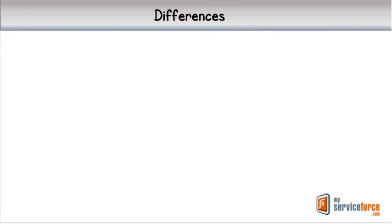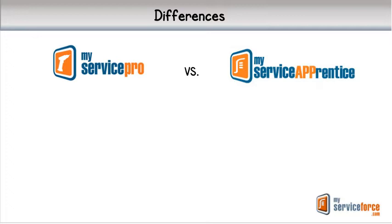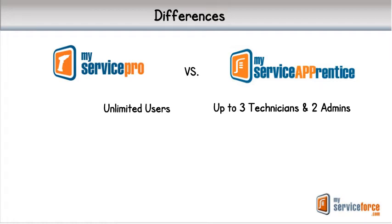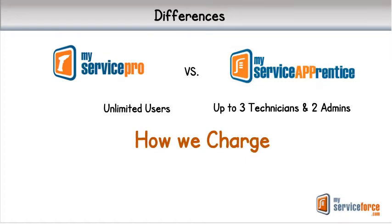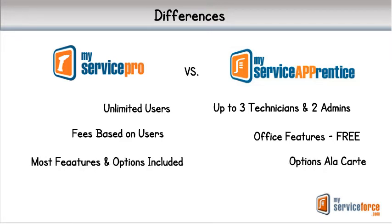Before we get started, let's do a broad definition of the differences between MyService Pro and MyService Apprentice. Functionally, the only difference between the two is the number of users they support. MyService Pro is unlimited — we have companies using it with one technician as well as those with nearly 100. MyService Apprentice is limited to no more than three field technicians and two office administrators. What additionally separates them is how we charge for them.